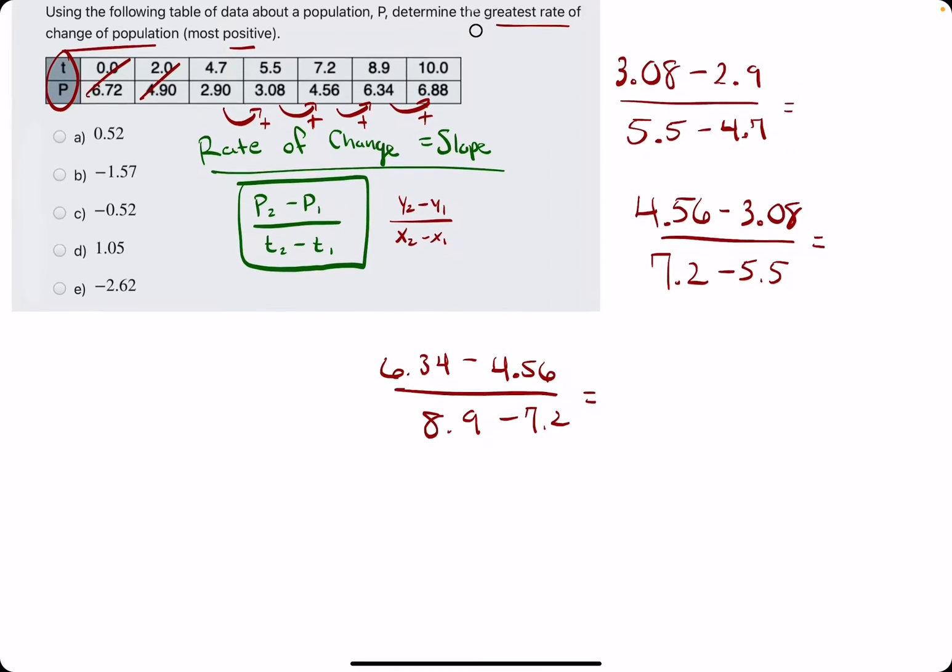And then the very last one between 8.9 and 10, so we have 6.88 minus 6.34 divided by 10 minus 8.9.